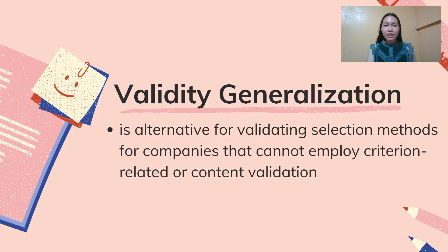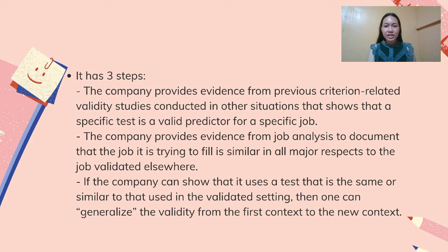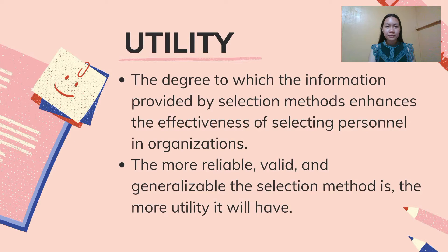Validity generalization stands as an alternative for validating selection methods for companies that cannot employ criterion-related or content validation. It has three steps. First, the company provides evidence from previous criterion-related validity studies showing that a specific test is a valid predictor for a specific job — for example, a test of emotional ability is a valid predictor for a nurse in a large hospital. Second, the company provides evidence from job analysis that the job it is trying to fill is similar in all major respects to the validated job. Lastly, if the company uses a test that is the same or similar to that used in the validated setting, one can generalize the validity from the first context to the new context.